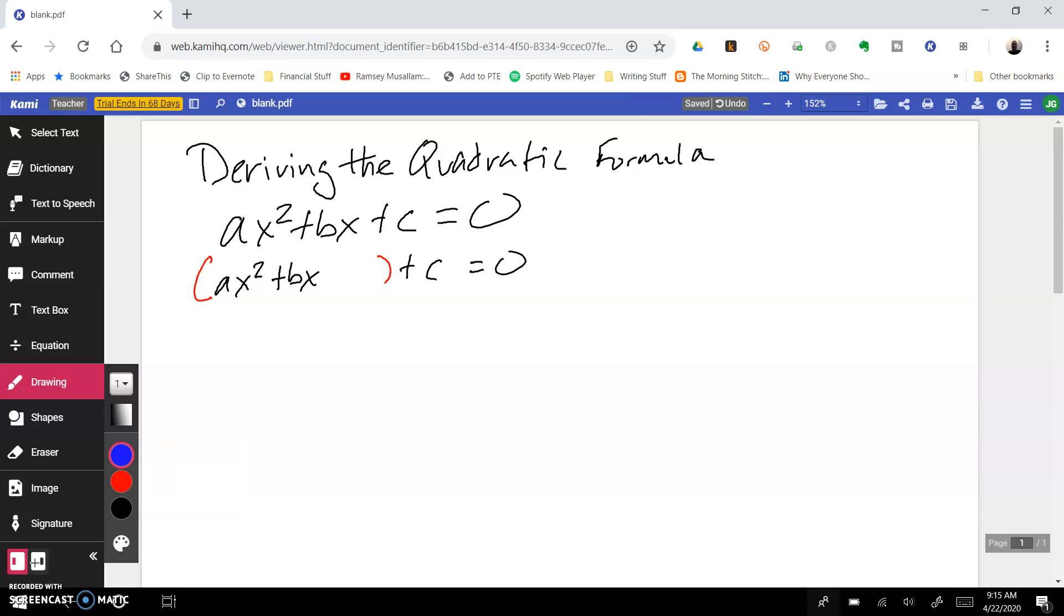Our next step is we want to take our x squared coefficient. We want that to be one. Life is just easier when it's one and we can see that we have this a here that we need to factor out. So if I pull the a out, what times a will give me ax squared? Well, x squared. What times a will give me bx? This one's a little trickier, but that would be b over a. I'm sure that looks a little confusing to you at first, but if we multiply this through, a times b over a, the a's divide out and you're just left with the bx. And of course, we still have our plus c on the outside.